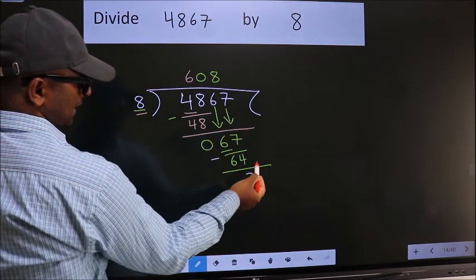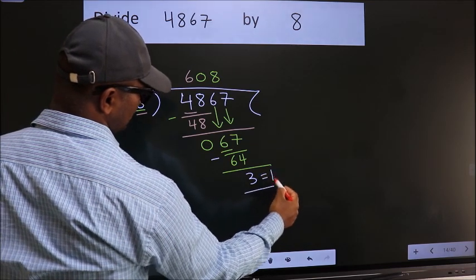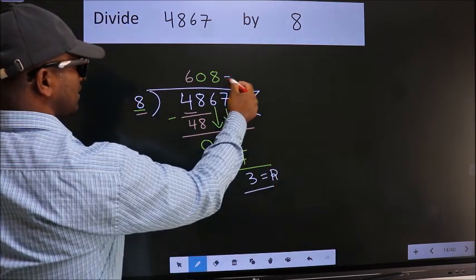No more numbers to bring it down. So we stop here. This is our remainder. This is our quotient.